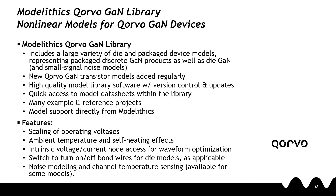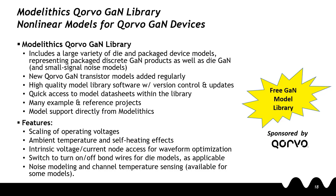The models in this Corvo GAN library feature the scaling of operating voltages, ambient temperature and self-heating effects, as well as intrinsic voltage and current node access for waveform optimization, and the ability to enable or disable bond wires for die models. Noise modeling as well as channel temperature sensing is available for some of these models as well. This library is sponsored by Corvo and is available to designers free of charge.